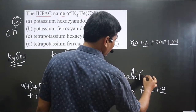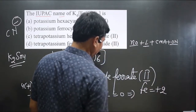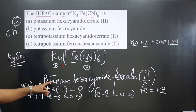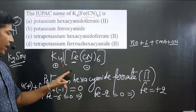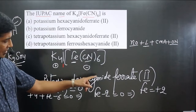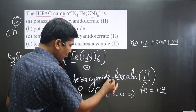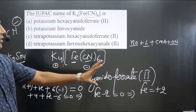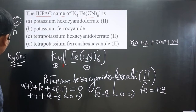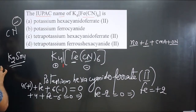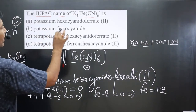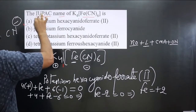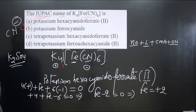So the IUPAC name of the complex is potassium hexacyanidoferrate(II). Looking at the options, the first option — potassium hexacyanidoferrate(II) — is correct.